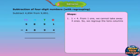1 is less than 4. From 1 one, we cannot take away 4 ones. So we regroup the tens column. 11 ones minus 4 ones is equal to 7 ones.